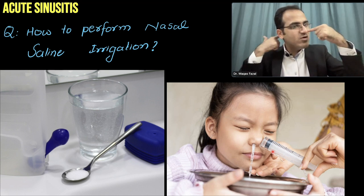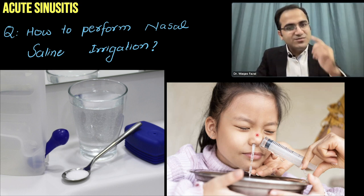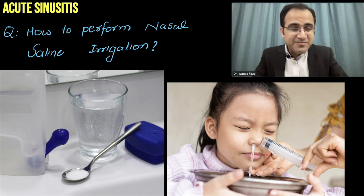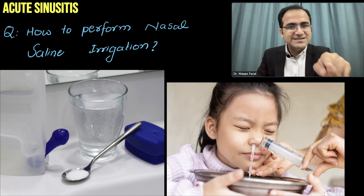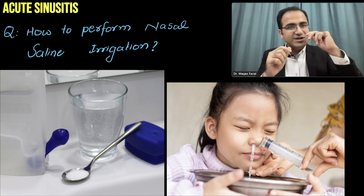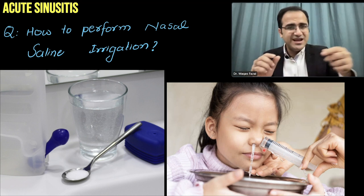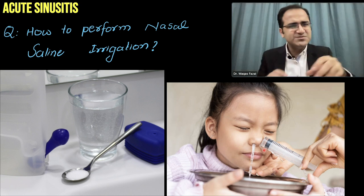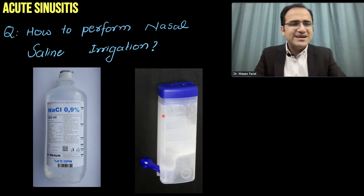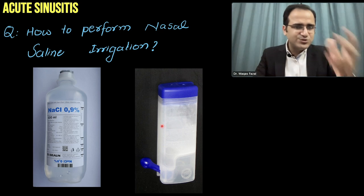Aim the syringe toward the back of the head — not the top — and inject the full solution into one nostril. The fluid enters from one side and exits the other, washing the nose until the solution runs clear. Importantly, do not reinsert the used syringe back into the sterile solution to avoid contamination. A 30 cc syringe allows a full wash in one setting. Pre-made commercial formulations are also available.